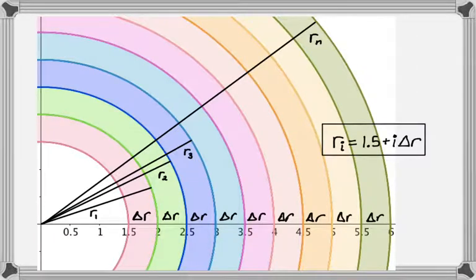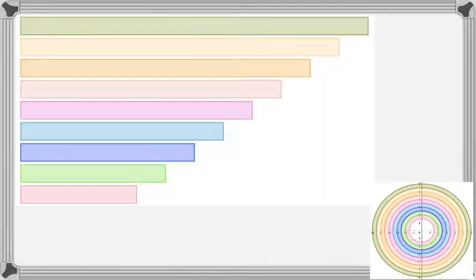Now we're going to actually cut these and straighten them out. They basically become rectangles, or at least when we let delta R approach zero, they become indistinguishable from rectangles. Here's our completely circular picture, then I cut it, straighten it out, and colored it correctly.